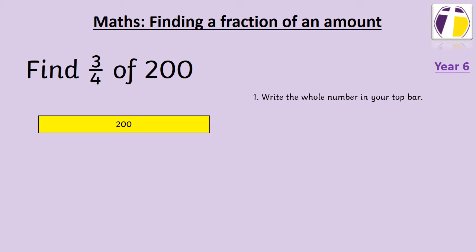First, we write 200 in the top bar as this is the total we are working with. We then draw a second bar and we split this into the amount of parts we are dividing by, or the denominator. You can see the denominator is 4 in 3 quarters, therefore we are splitting our bar into 4 sections.